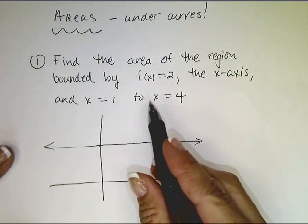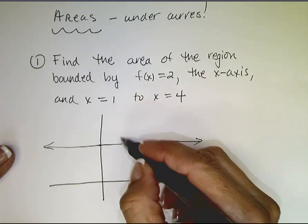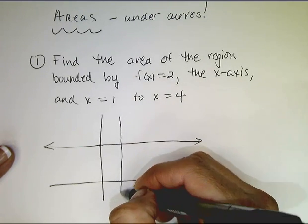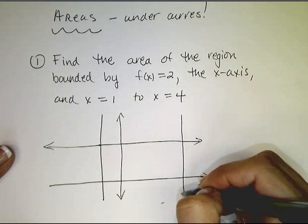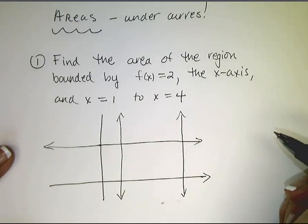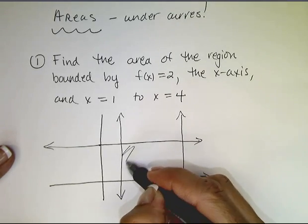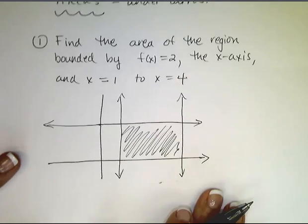The x-axis I've drawn, and then x equals 1 is this vertical line, and then x equals 4 is this vertical line. All right, and so what I want to find is the area of this region.